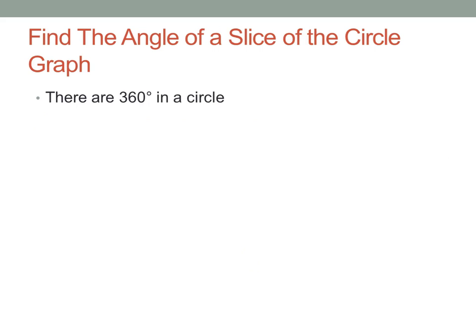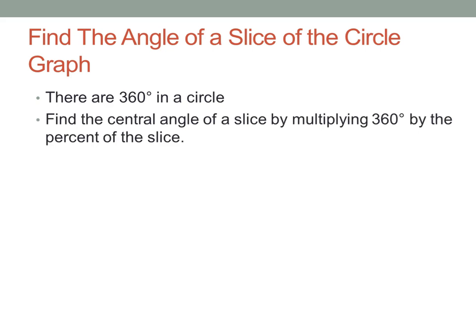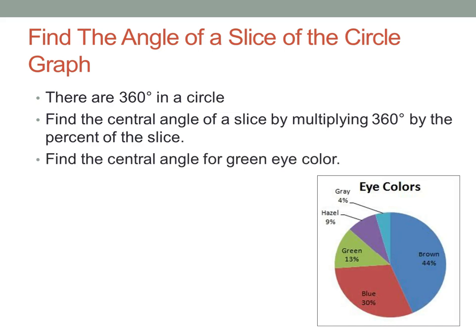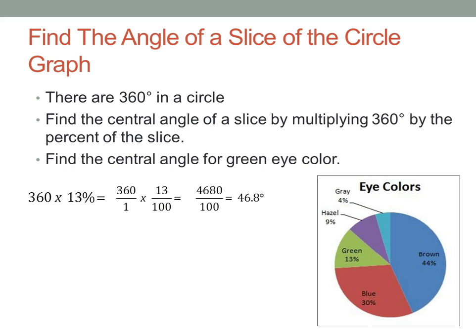Now let's find the angle of a slice of a circle graph. Since there are 360 degrees in a circle, to find the central angle of a slice we multiply 360 degrees by the percent of the slice. Looking at eye color again — green is 13%. So we multiply 13% times 360 degrees: making them fractions and multiplying across, then moving the decimal two places, gives us 46.8 degrees.